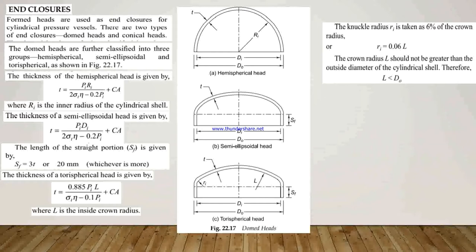First we will see the Enclosures. Enclosures are the formed heads which are used as enclosures for cylindrical Pressure Vessels. There are two types of Enclosures: first is domed heads and second is conical heads. These domed heads are further classified into three groups, that is Hemispherical, Semi-Ellipsoidal, and Torispherical, as shown in figure. In the figure, figure A is the Hemispherical Head, figure B is the Semi-Ellipsoidal Head, and the third is the Torispherical Head.